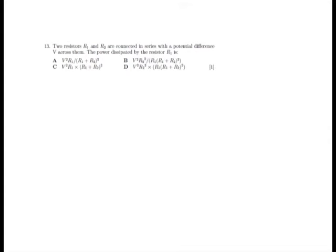Two resistors, R1 and R2, are connected in a series with a potential difference V across them. The power dissipated by the resistor R1 is, and we've got a series of options.